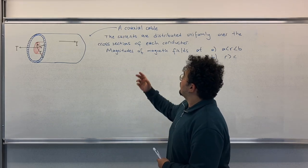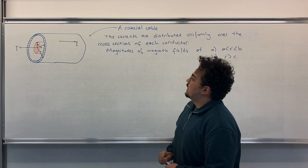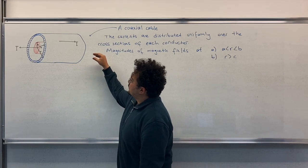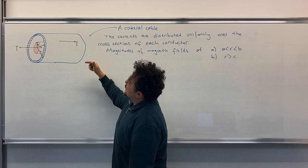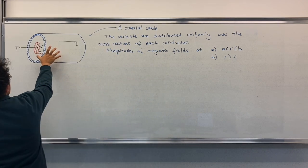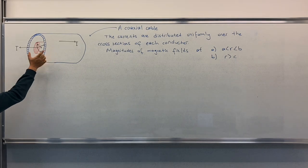So we have a coaxial cable. In this cable we have an inner conductor and outside conductor. We have two currents which have opposite directions.